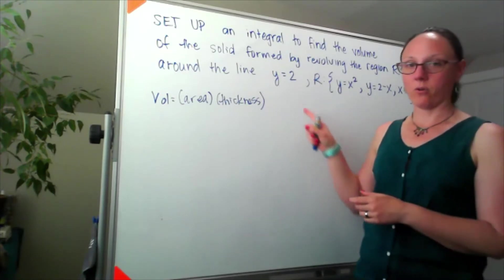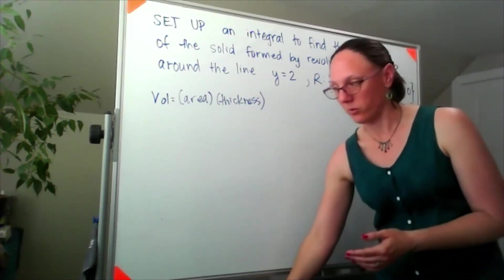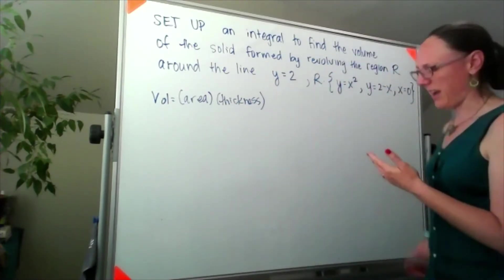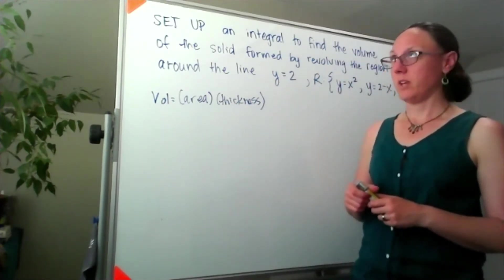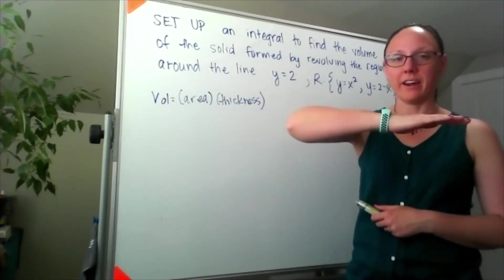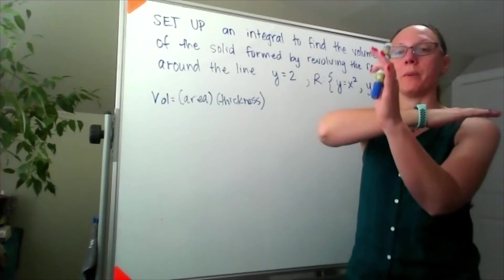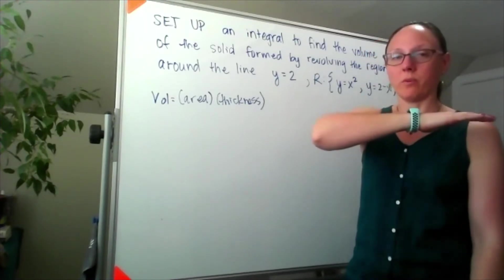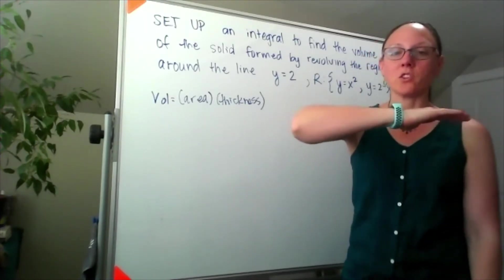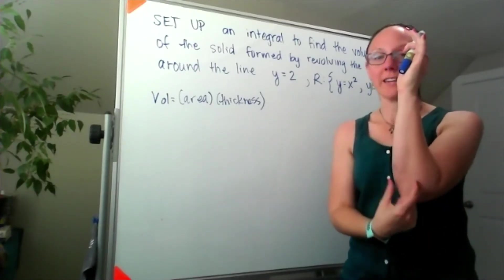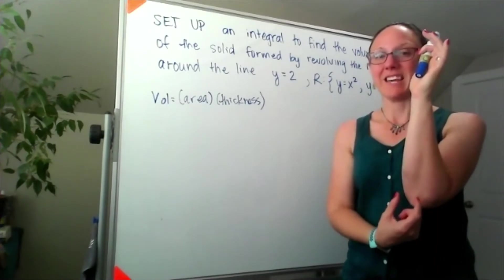We're revolving around the line y equals 2, so the line y equals 2 is this kind of a line, and our cross sections are always going to be perpendicular to what we revolved around. So if y equals 2 is this kind of a line and my cross sections are perpendicular, then my cross sections will have a thickness of dx.